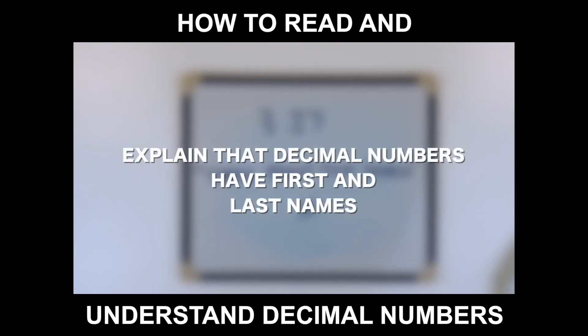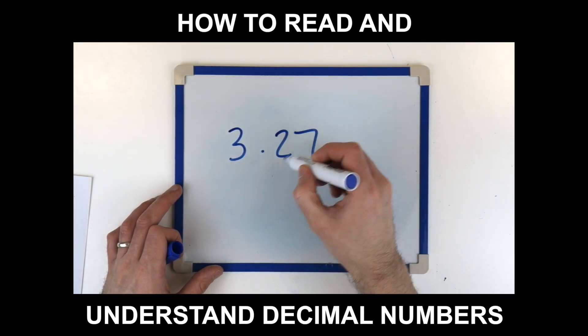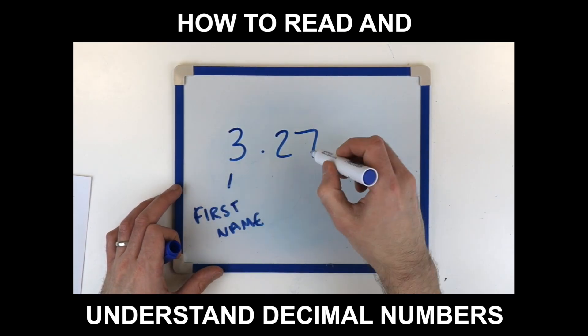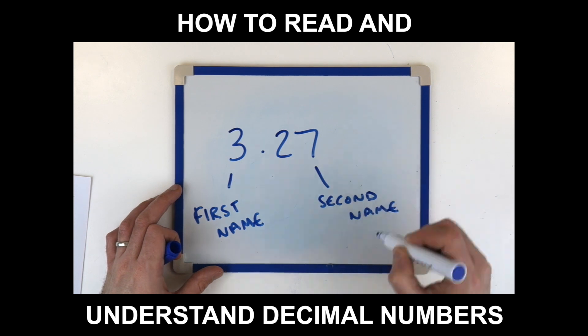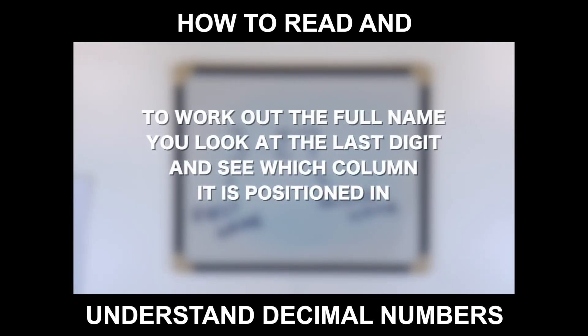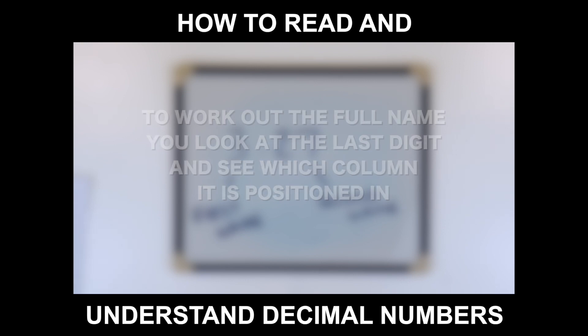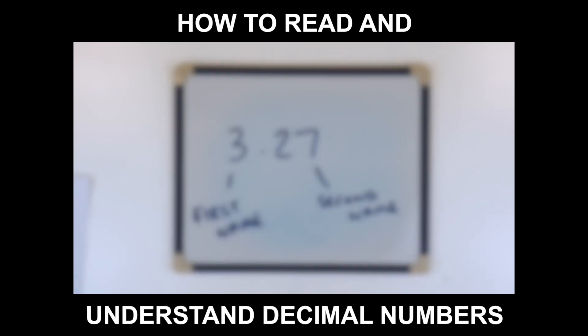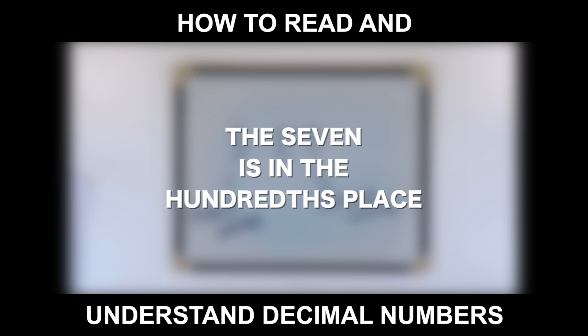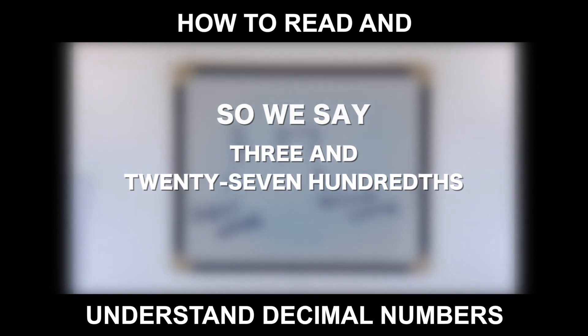Explain that decimal numbers have first and last names. The first name is the whole number. The second name is the decimal number. To work out the full name, you look at the last digit and see which column it is positioned in. For example, the 7 is in the hundredths place, so we say 3 and 27 hundredths.